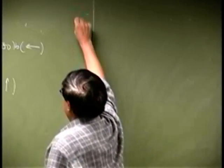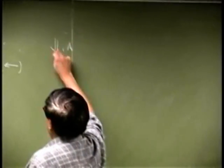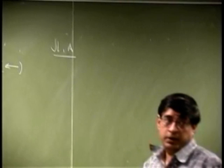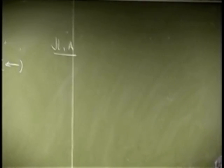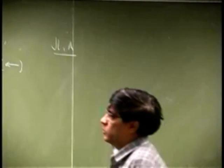A joint, the first choice of joint will be joint A, because any time you pick a joint, you want to pick a joint with maximum of two unknowns.